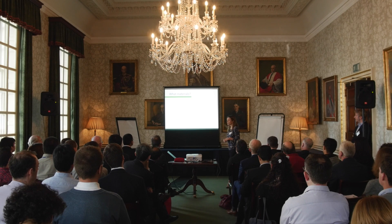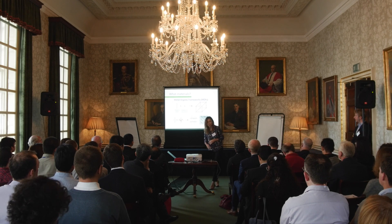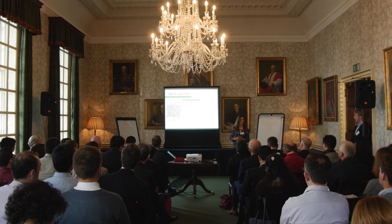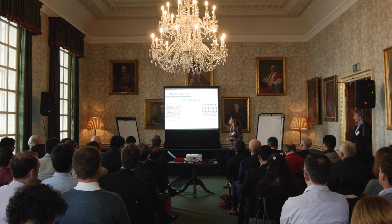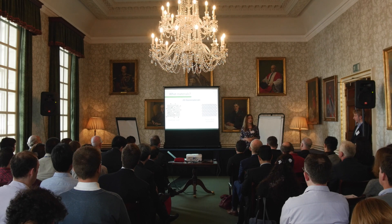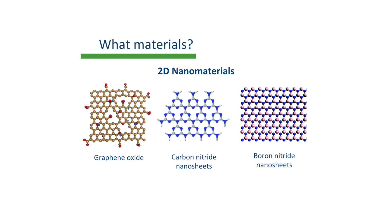The materials we are working with include 3D porous materials, an example of which are metal-organic frameworks or MOFs — probably the archetype of adsorbent structures because of their high porosity and crystalline structure. In addition, we are working with 2D nanomaterials such as graphene oxide, an oxidised form of graphite. We also work with boron nitride, which is very similar to graphene except the carbon atoms have been replaced by boron and nitrogen atoms, giving enhanced thermal and chemical stability. If we replace the boron atom in boron nitride with carbon, we obtain carbon nitride, which is a photocatalytic material.